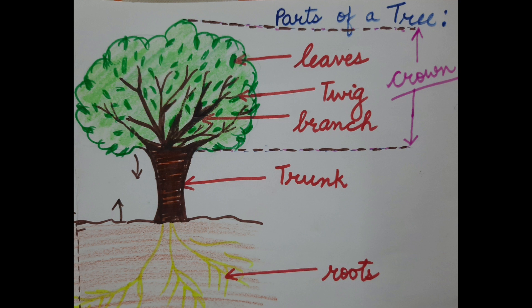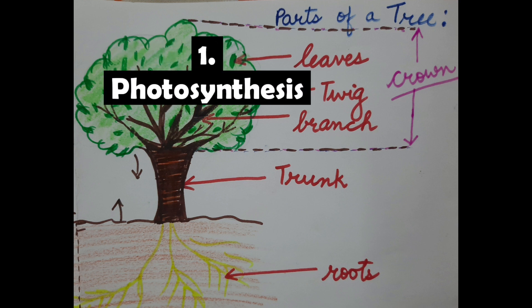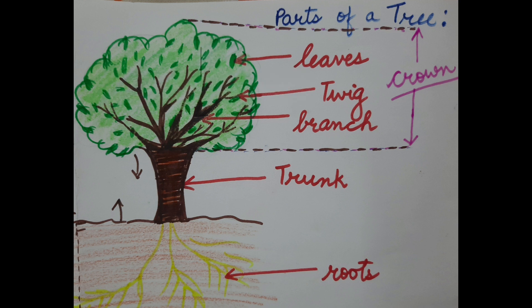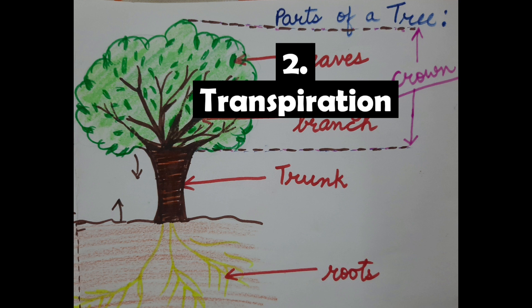The crown plays two important roles. Number one: photosynthesis by collecting energy from the sun. And second: transpiration by allowing the tree to remove extra water to keep it cool.